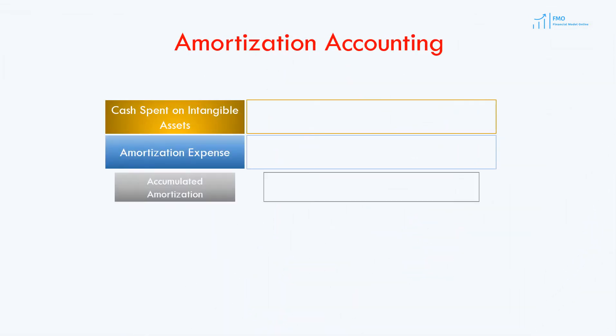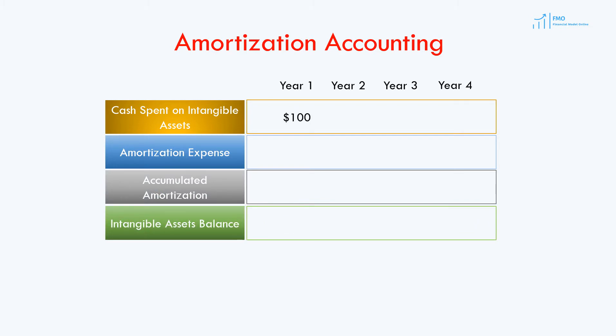Let's take a look at the amortization expense accounting. First, we spent $100 at the beginning of year 1 on the acquisition of an intangible asset with a useful life of 4 years. This cash spent will appear on the cash flow statement, which we will learn about later in the course. Next, at the end of year 1, we record the amortization expense on the income statement, which is equal to 25% of the value of the asset, or $25. The accumulated amortization will also be $25 at the end of year 1.